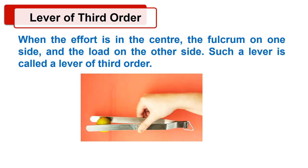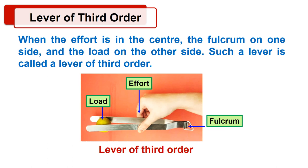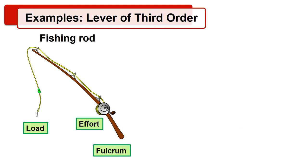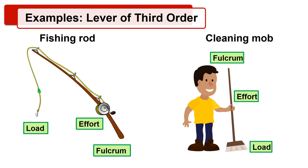From this we will define the lever of third order. When the effort is in the center, the fulcrum on one side, and the load on the other side, such a lever is called a lever of third order. Examples of lever of third order are fishing rod, cleaning mop, etc.